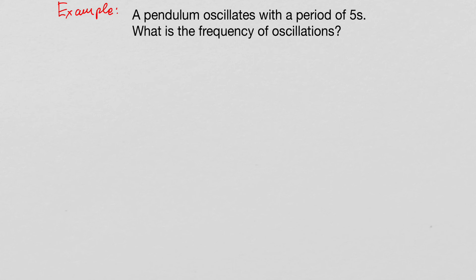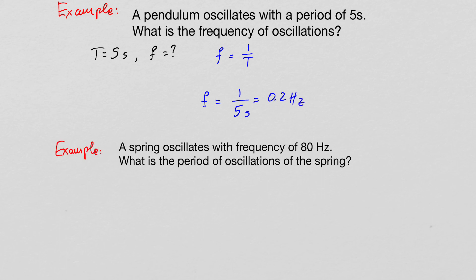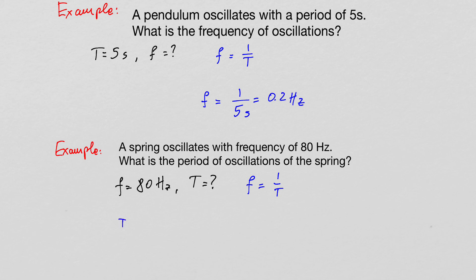Let's do two examples. First: a pendulum oscillates with a period of 5 seconds — what is the frequency? Using f = 1/T, the frequency equals 1 divided by 5 seconds, which is 0.2 hertz. Second: a spring oscillates with a frequency of 80 hertz — what is the period? Rearranging, T = 1/f = 1/80 hertz = 0.0125 seconds.